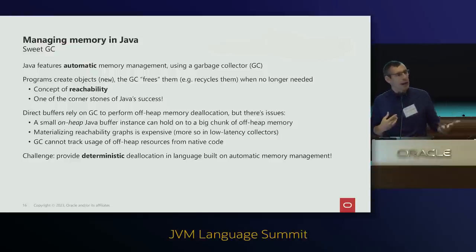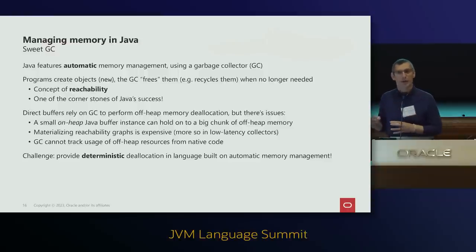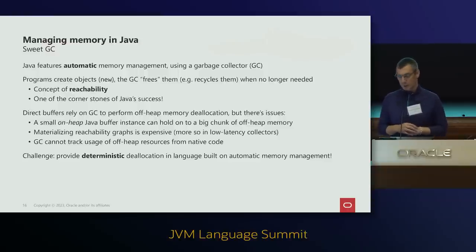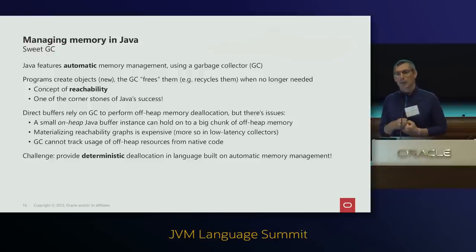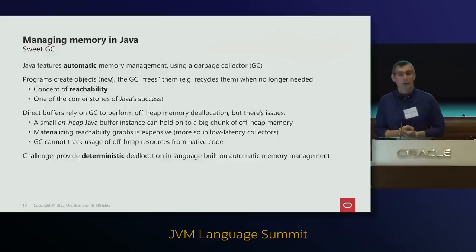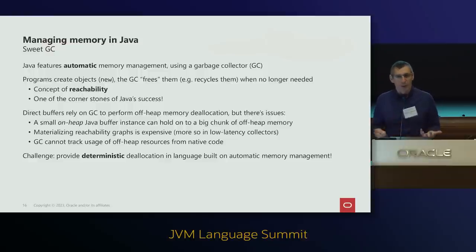If you run ByteBuffers with ZGC, cleaners are not called as frequently as with G1. Also, GC only tracks resources used inside Java programs. If your memory segment goes to native code and the native code keeps a pointer and accesses it later, there's nothing the garbage collector can do to prevent a crash. You can use reachability fences, but that has its own pros and cons.